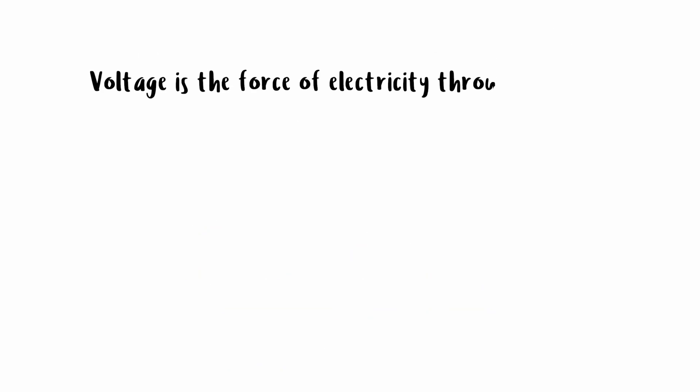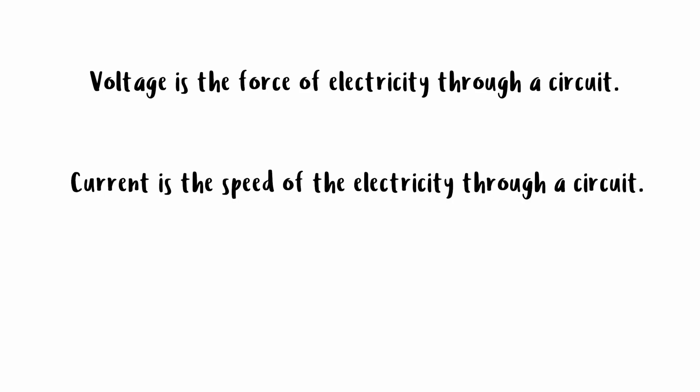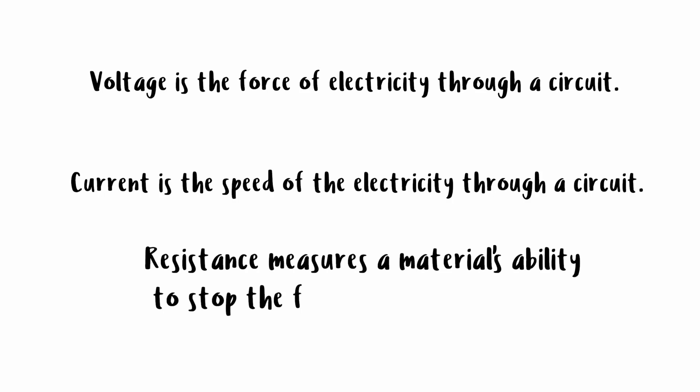Voltage is the force of electricity through a circuit, or the difference in charge between two points in a circuit. Current is the speed at which the electricity flows through the circuit. And resistance measures the material's ability to stop the flow of electricity.